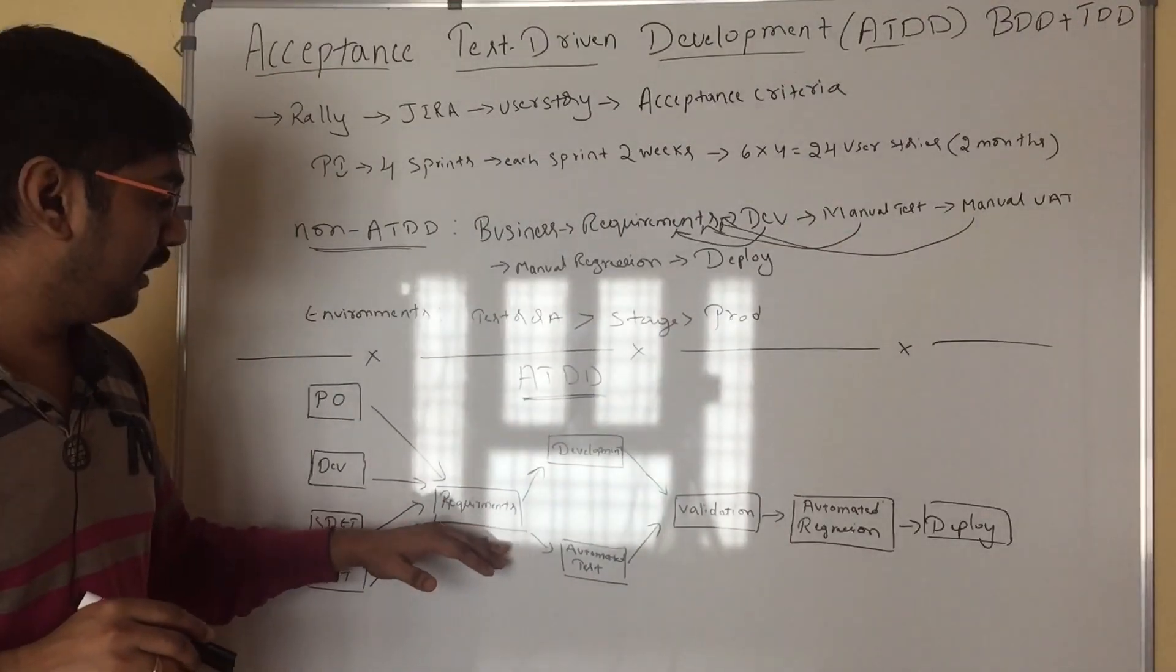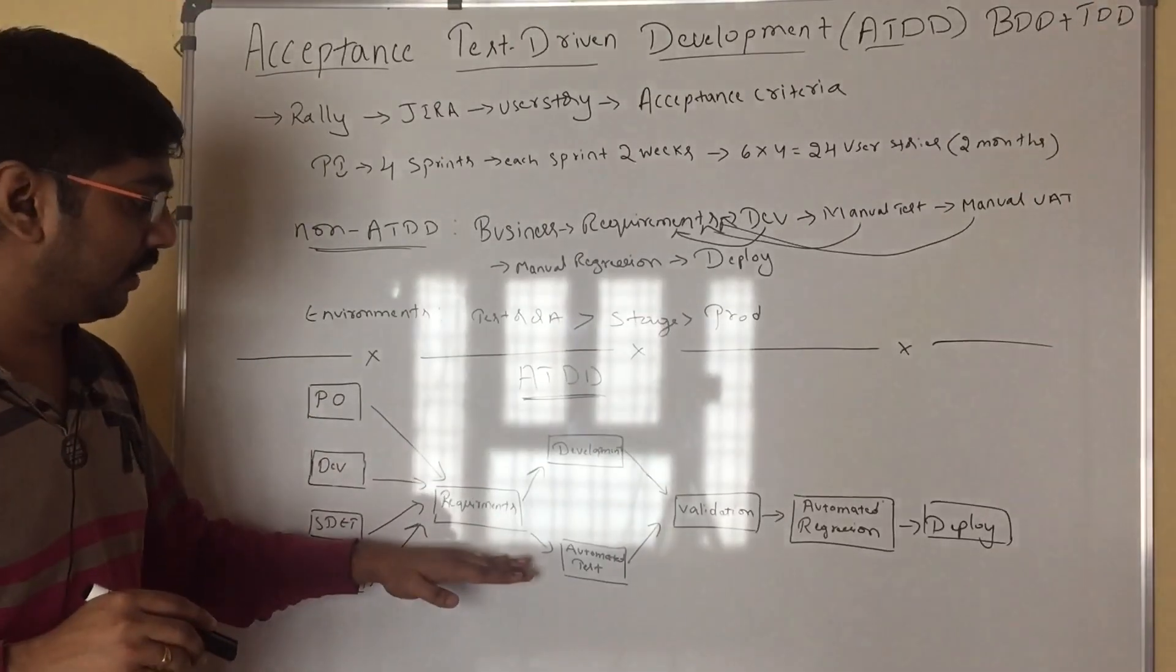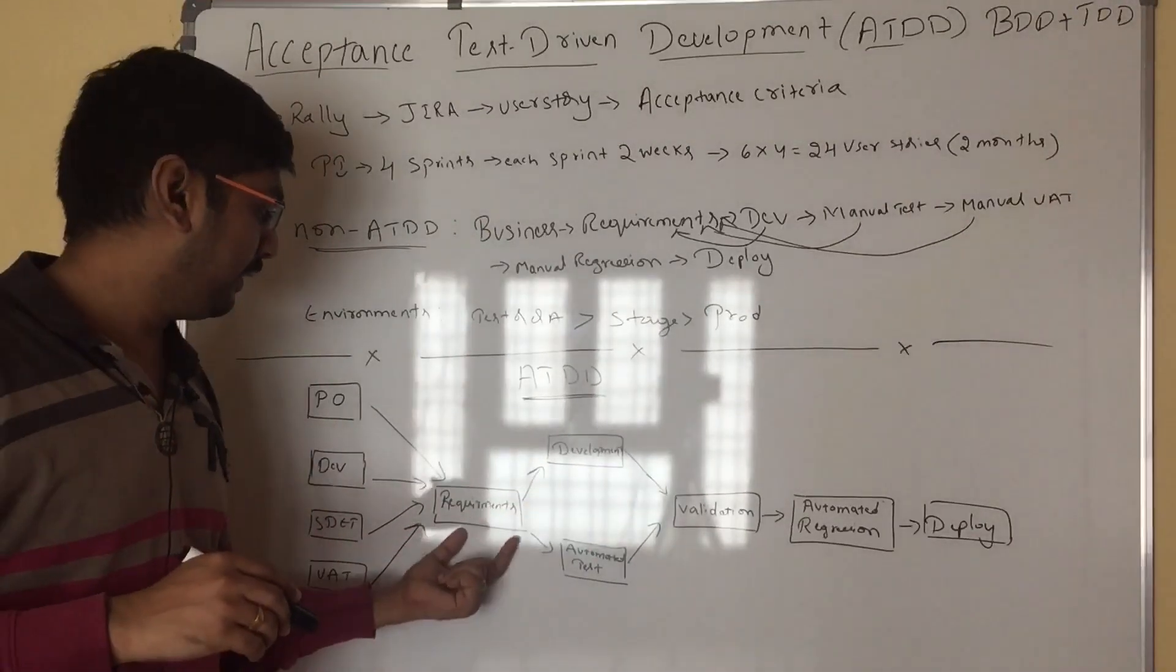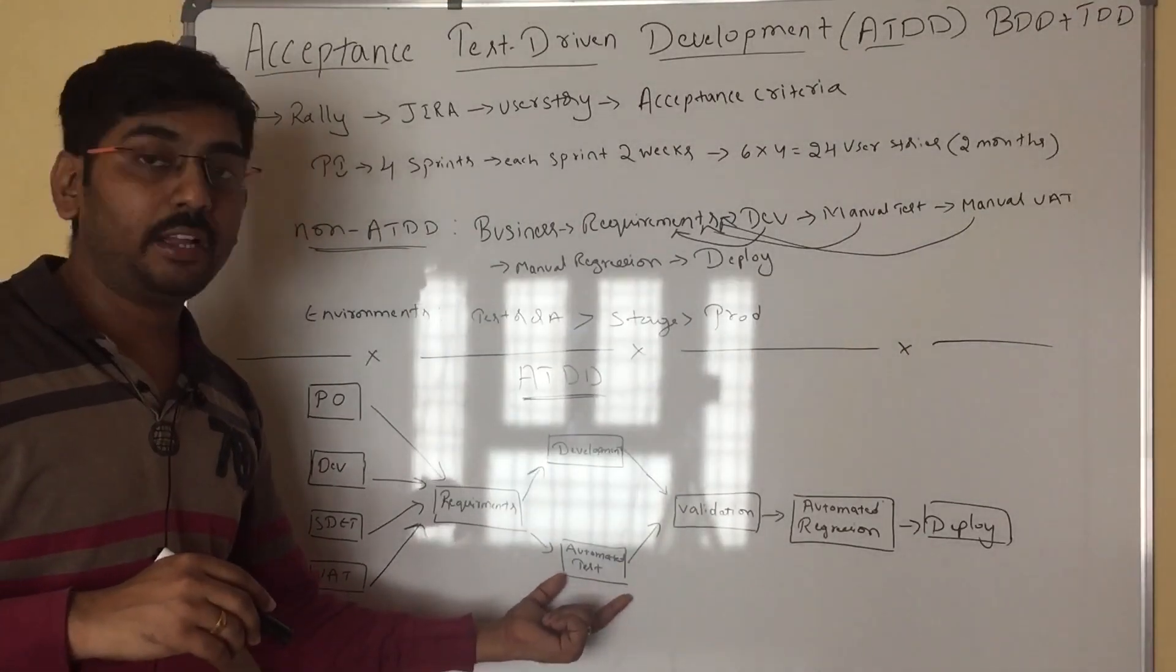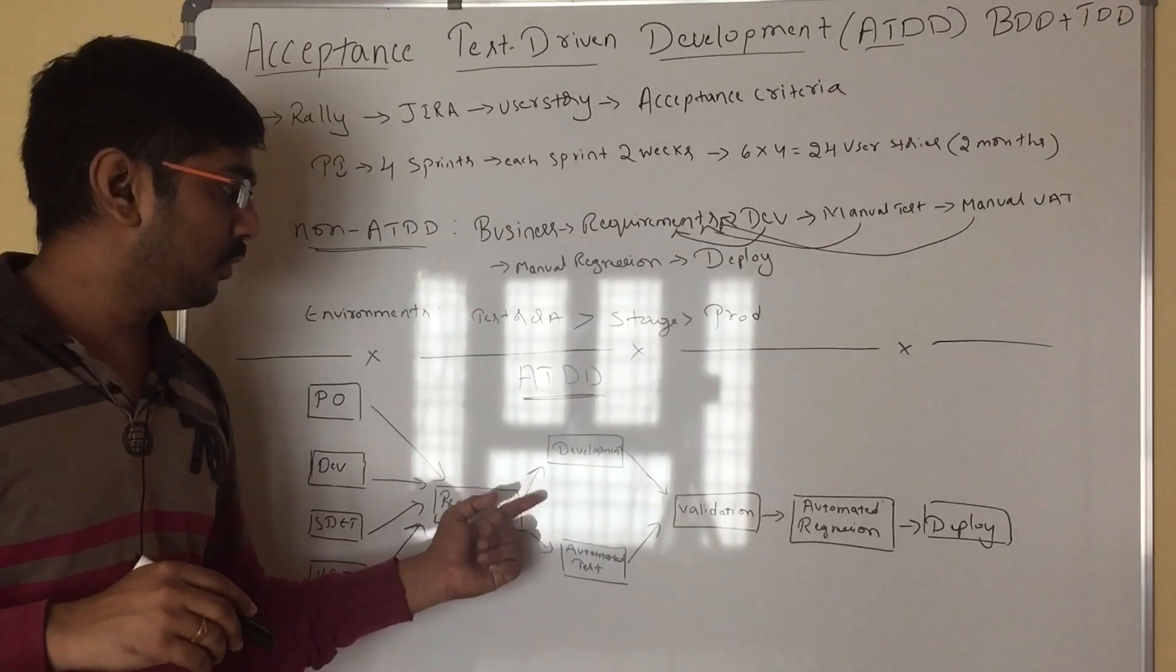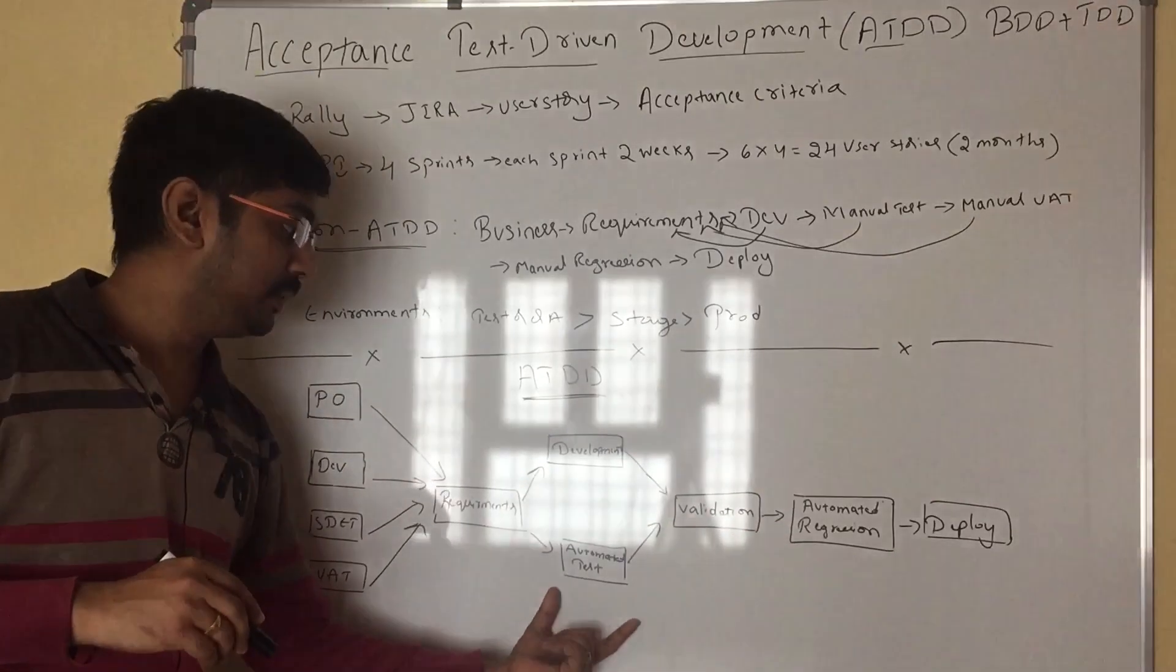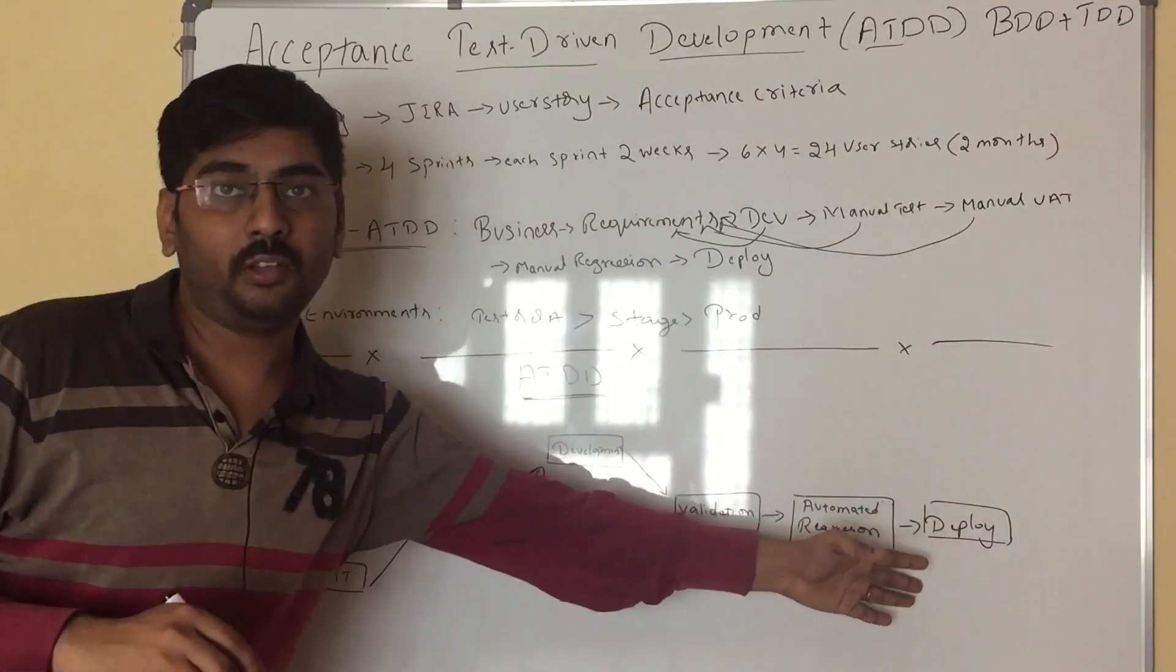In that way, all can stand in one phase, one line. For the same requirements, developer will be doing the development and tester will be doing the automated tests. Here, we are doing an in-sprint automation. Automated test cases. The same will be validated in automated regression. The same features what we developed for in-sprint automation can be used for automated regression and during the deployment phase as well.